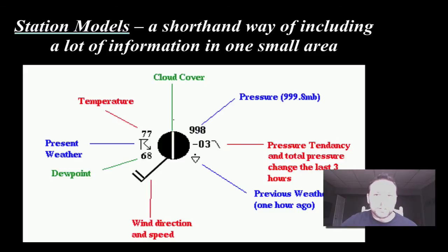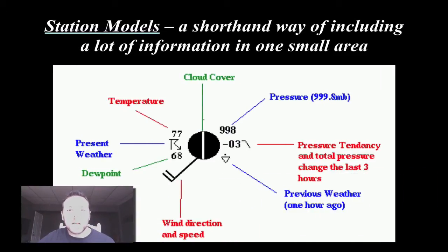Basically, those station models are a shorthand way of including a lot of information in one small area. Kind of like a code, in a way. So by looking at this, we can see that we have the main body of the station model. The shaft that comes out with these two pieces right here. So we have cloud cover, pressure, the predicted pressure that's going to be happening, the trend, the barometric trend. Previous weather, wind direction and speed, dew point, present weather, temperature. All this information is on our station model.